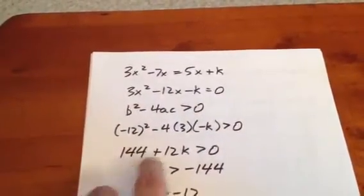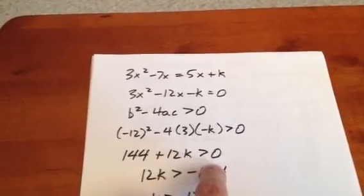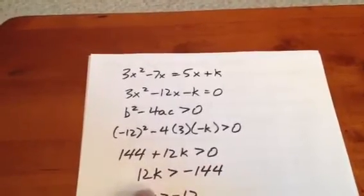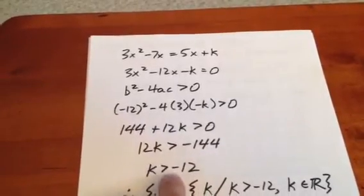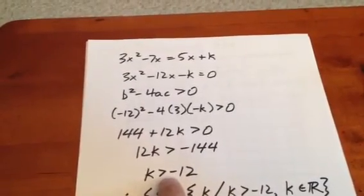we get 144 + 12k > 0. Well, that means 12k has to be greater than -144, or in other words, k has to be greater than -12.